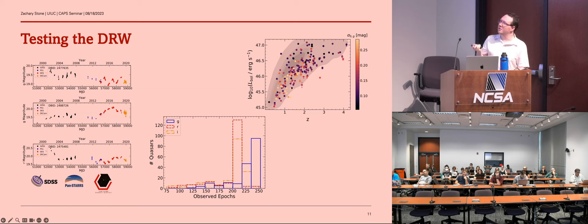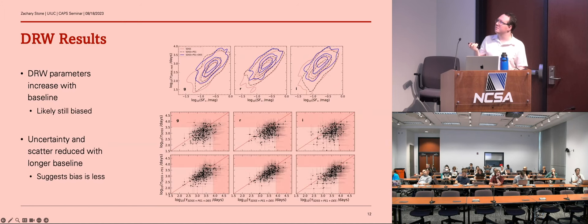So we fit each of these light curves, GR and I for each of the quasars, to a DRW, extracted the parameters, and this is what we got. So this top plot shows the extracted parameters as a function of baseline. So we truncated the baseline to only the Sloan data, fit it, then we added the PanStars data, fit it, then we added the DES data, fit that. And we find that as we increase the baseline, so we go from red to black to blue, the tau parameter and also the sigma parameter, because there's kind of a degeneracy there, still increase.